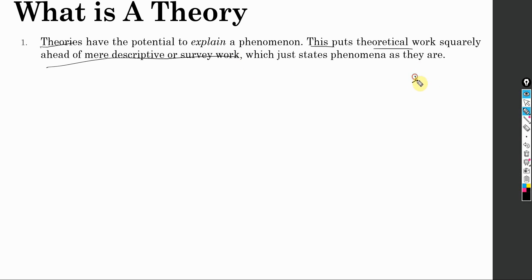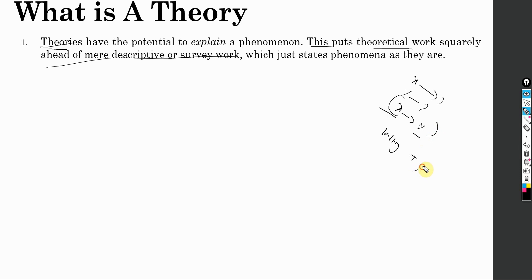You are not just describing 'X said this, Y said this' or listing results of the relationship between two variables. Theories will help you explain why this relationship exists the way it does — why it is positive, why it is negative, or why there is a relationship between the concepts at all. It helps you explain the mechanism of the relationship as well as the possible reasons that a particular relationship may exist.